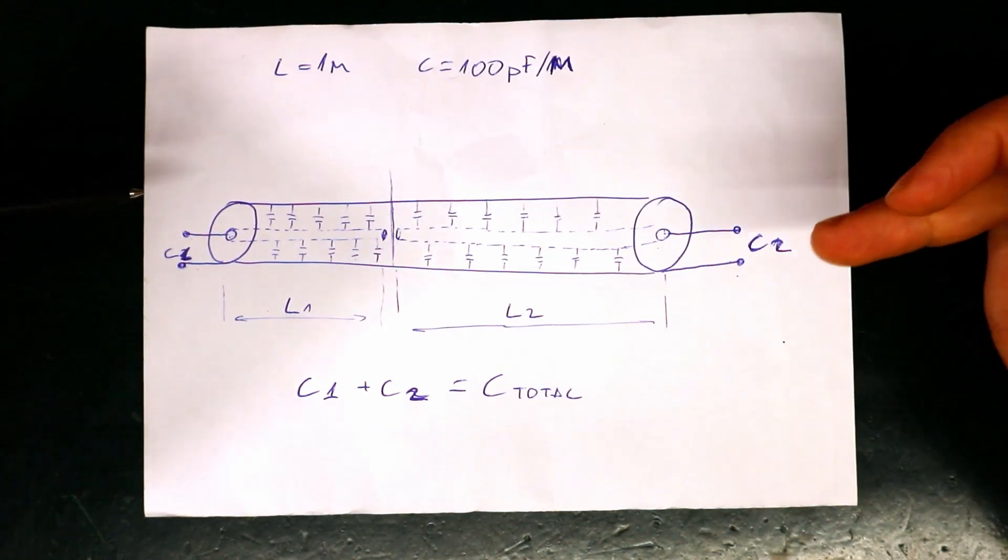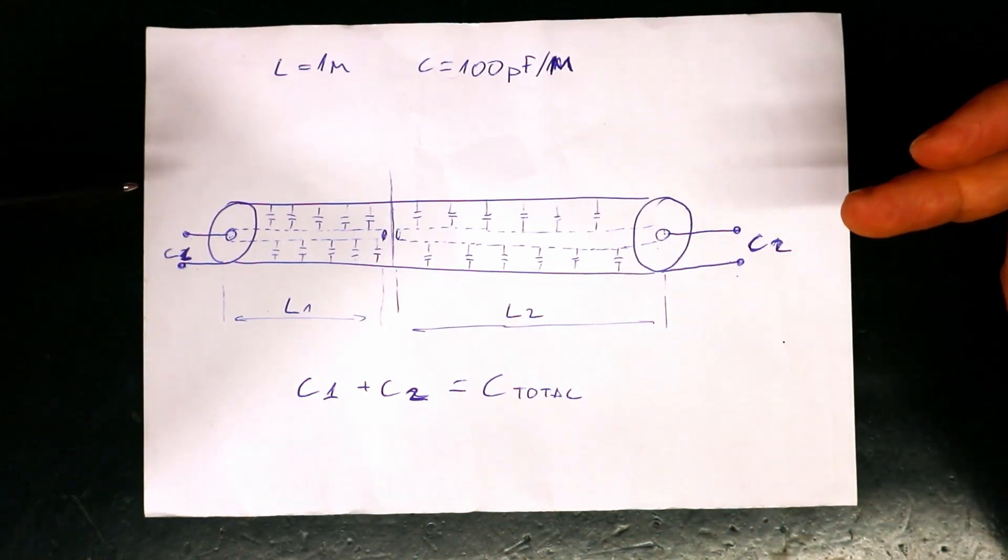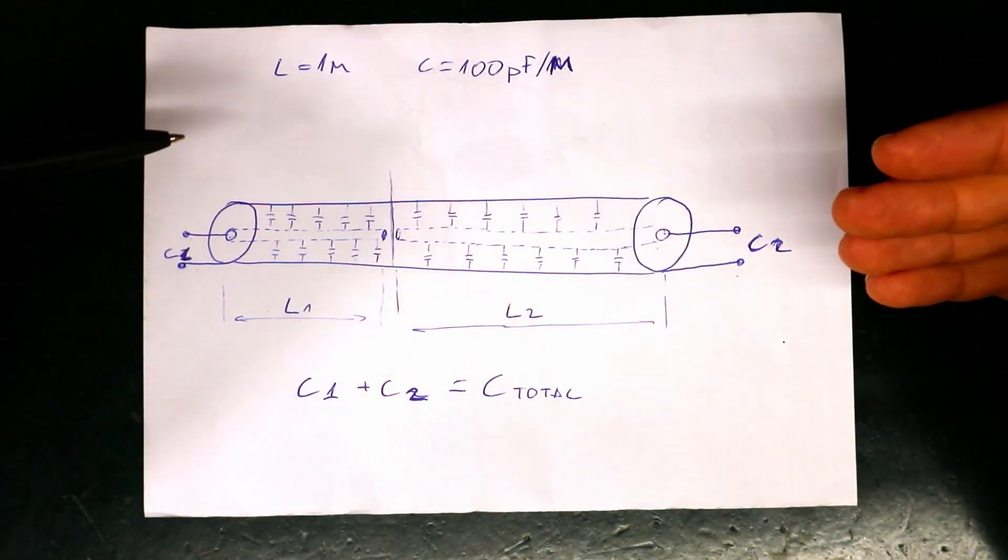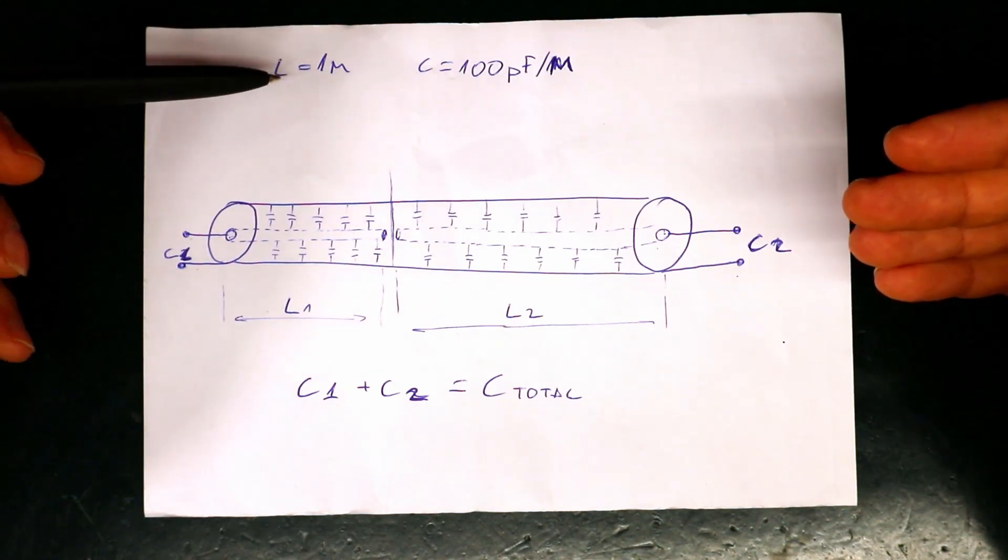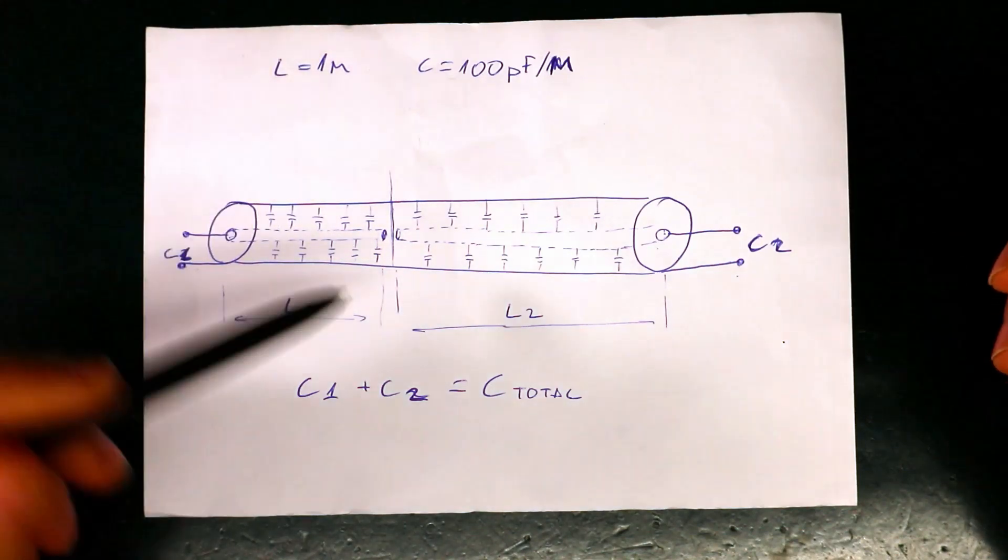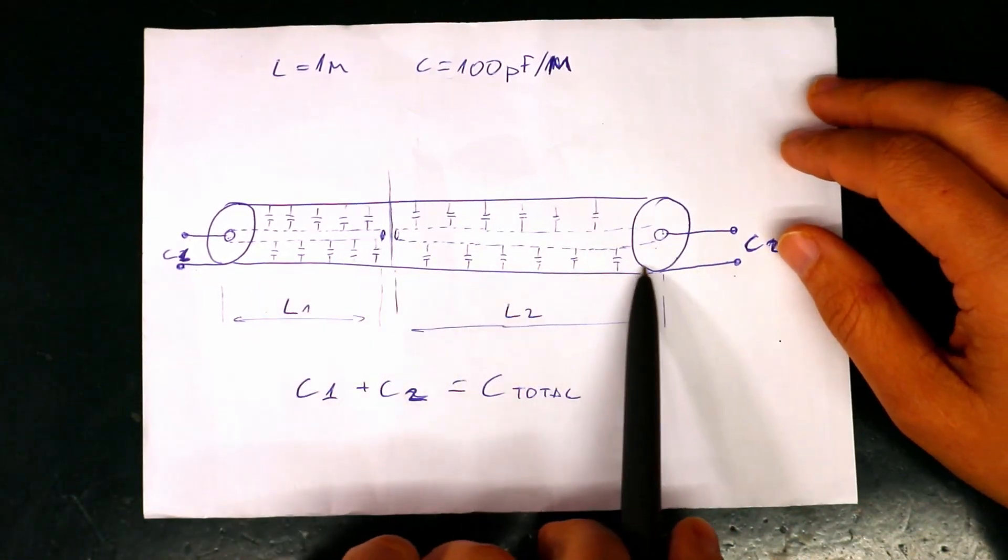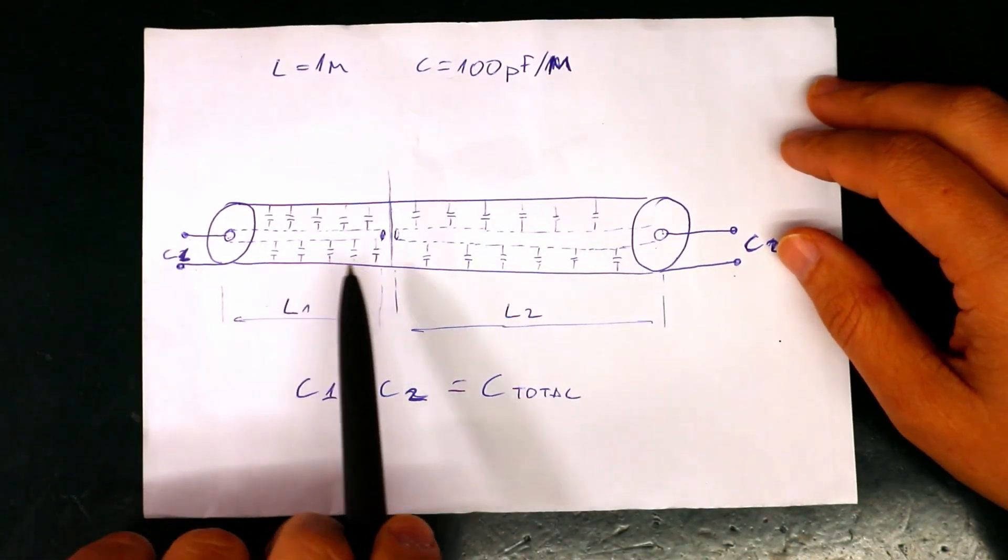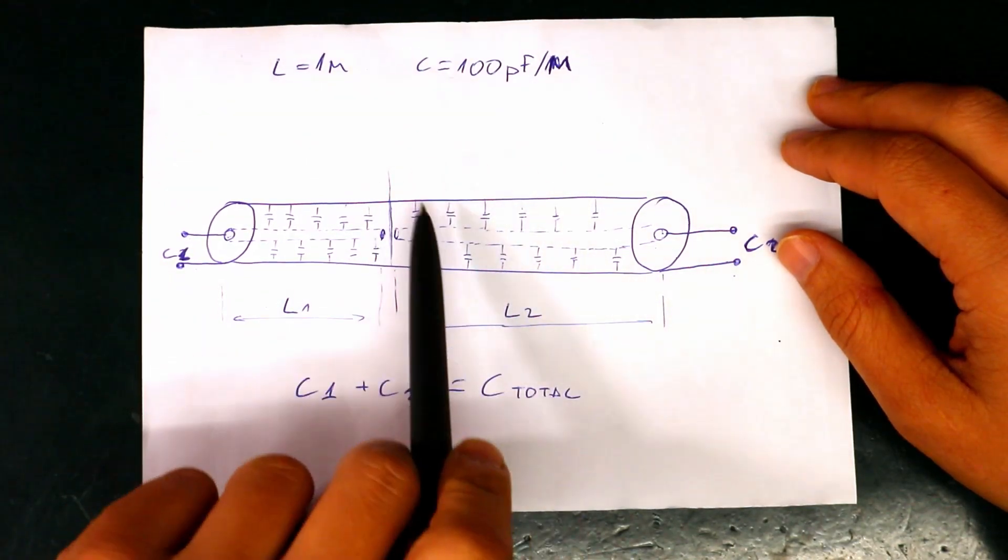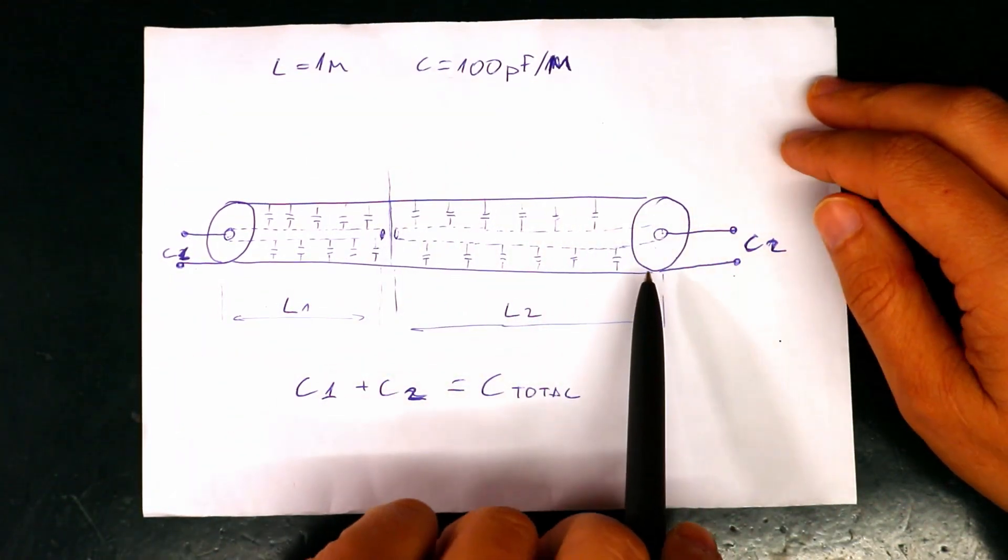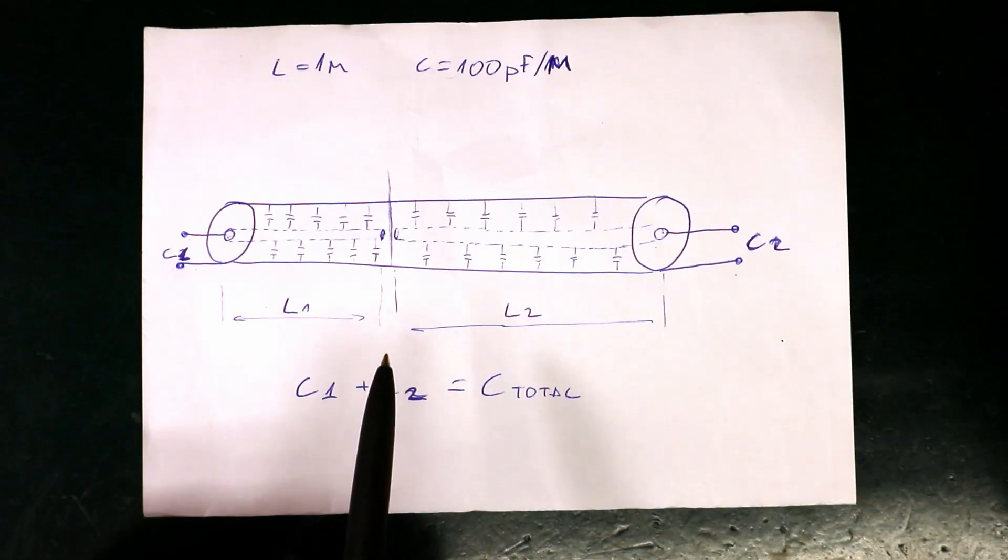Imagine we have a cable with a fixed and known length and just for the example let's say the length of the cable is one meter and there is an open circuit somewhere across this cable. It could be here or here or next to the middle or next to the other end and we don't know where is the open circuit for now.